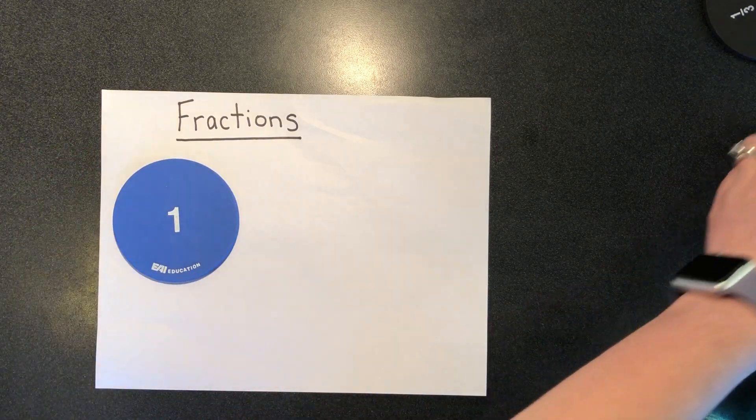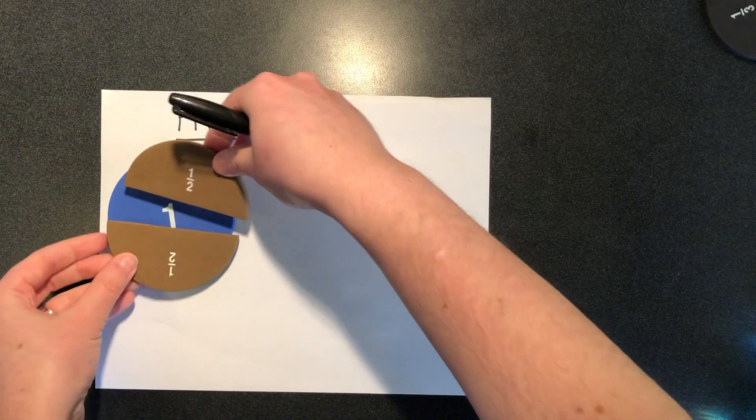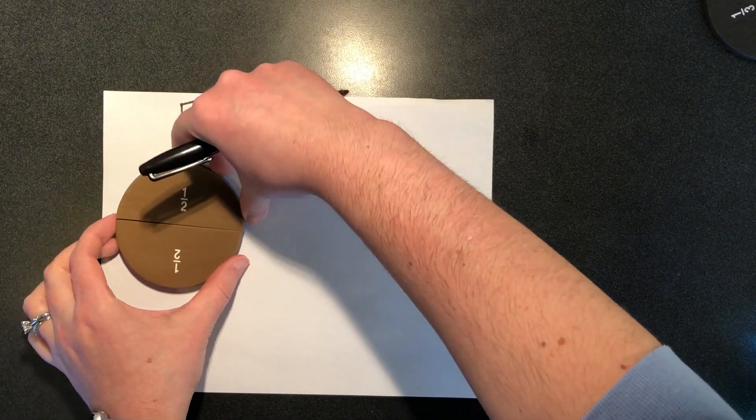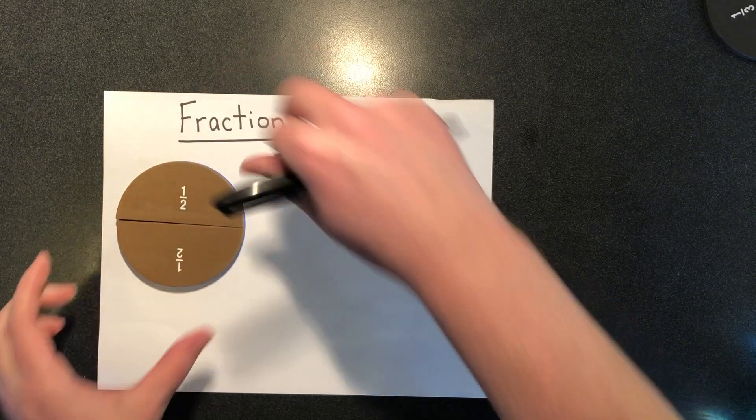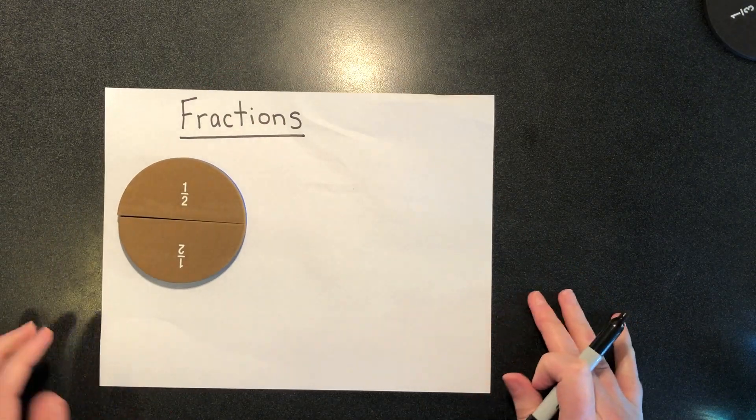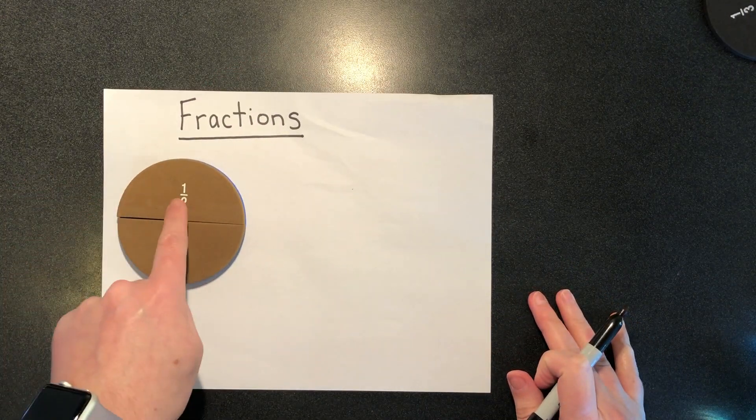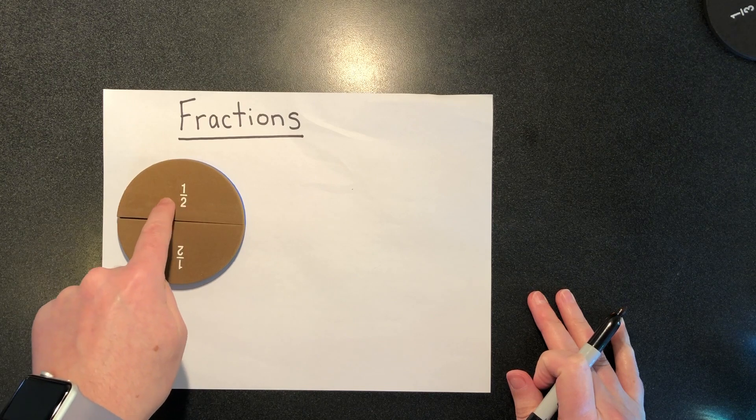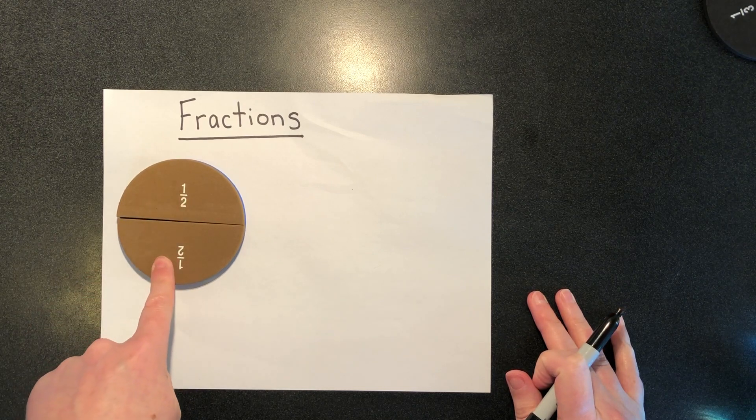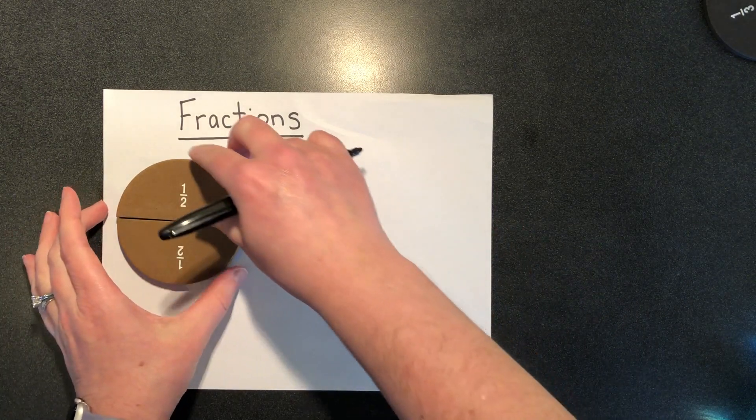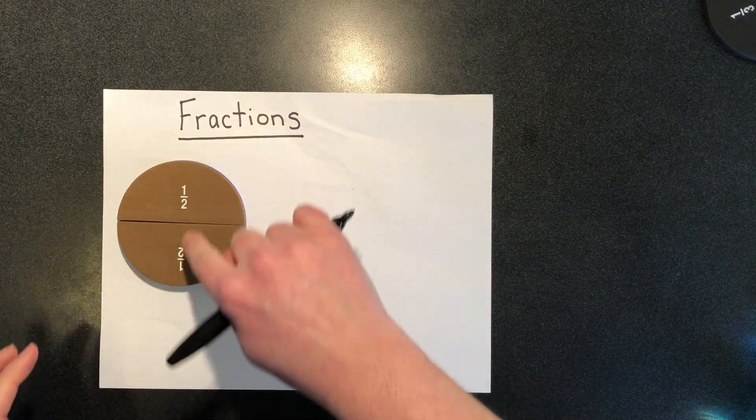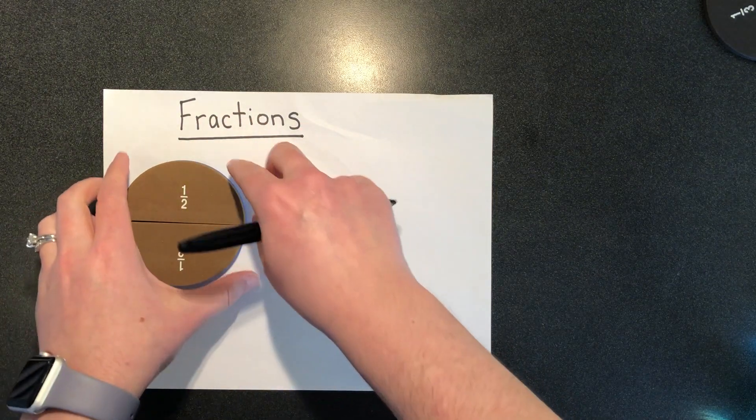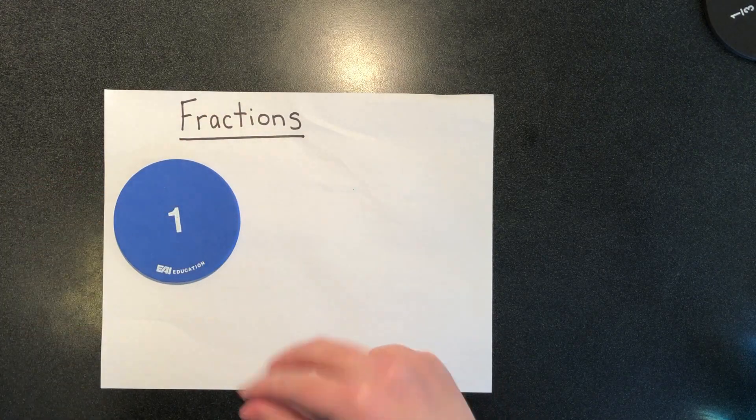If I were to break that hole into two equal pieces, I would call each of those pieces one half. So here's one half, here's another one half. So when I put those together, I have two halves, which is the same as one whole.